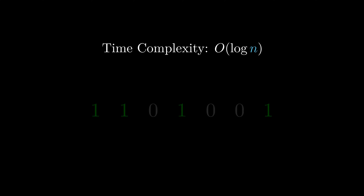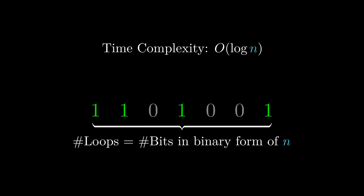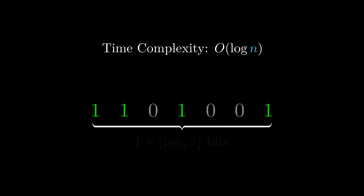The time complexity of the binary exponentiation algorithm is O(log n), because the number of iterations is equal to the number of bits in binary n. If n is an integer, the number of bits in its binary form is 1 plus the floor of log n. Here, we assume the time complexity of each multiplication is O(1).